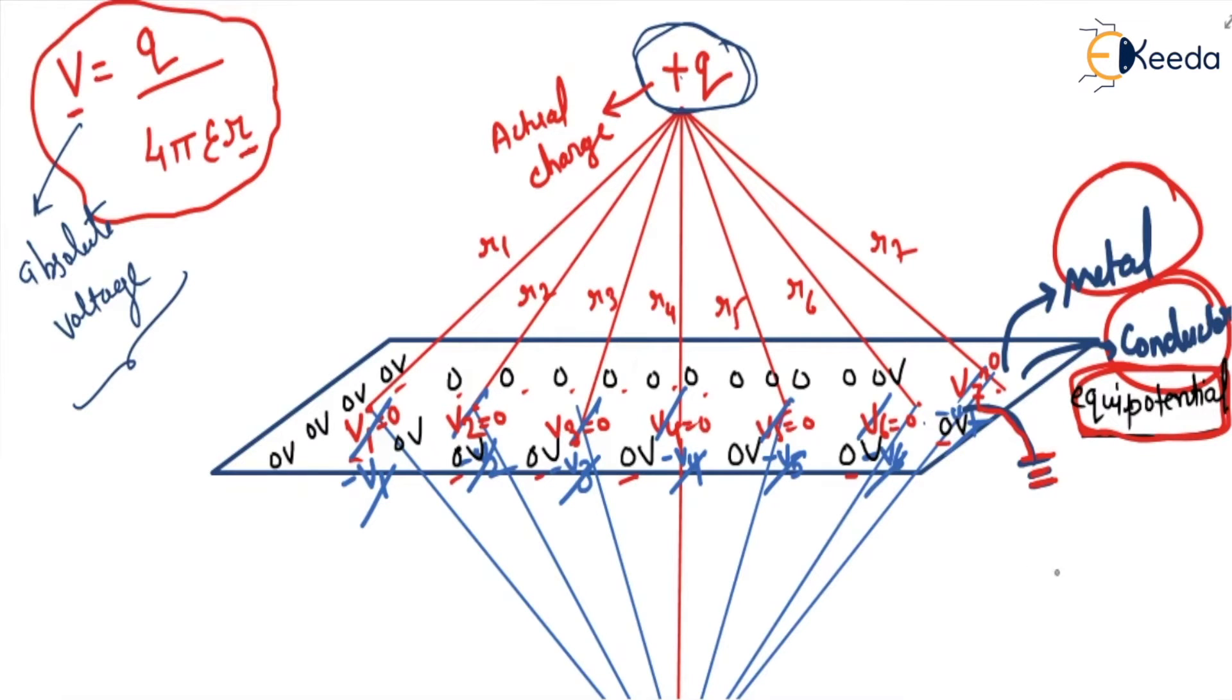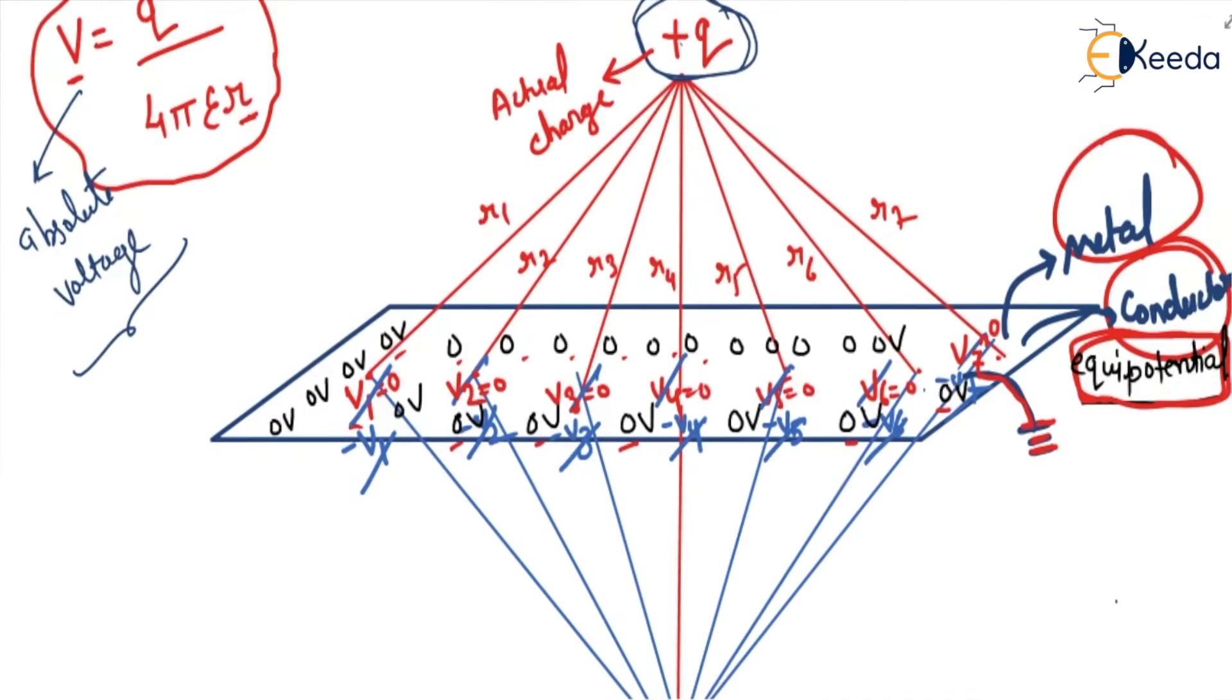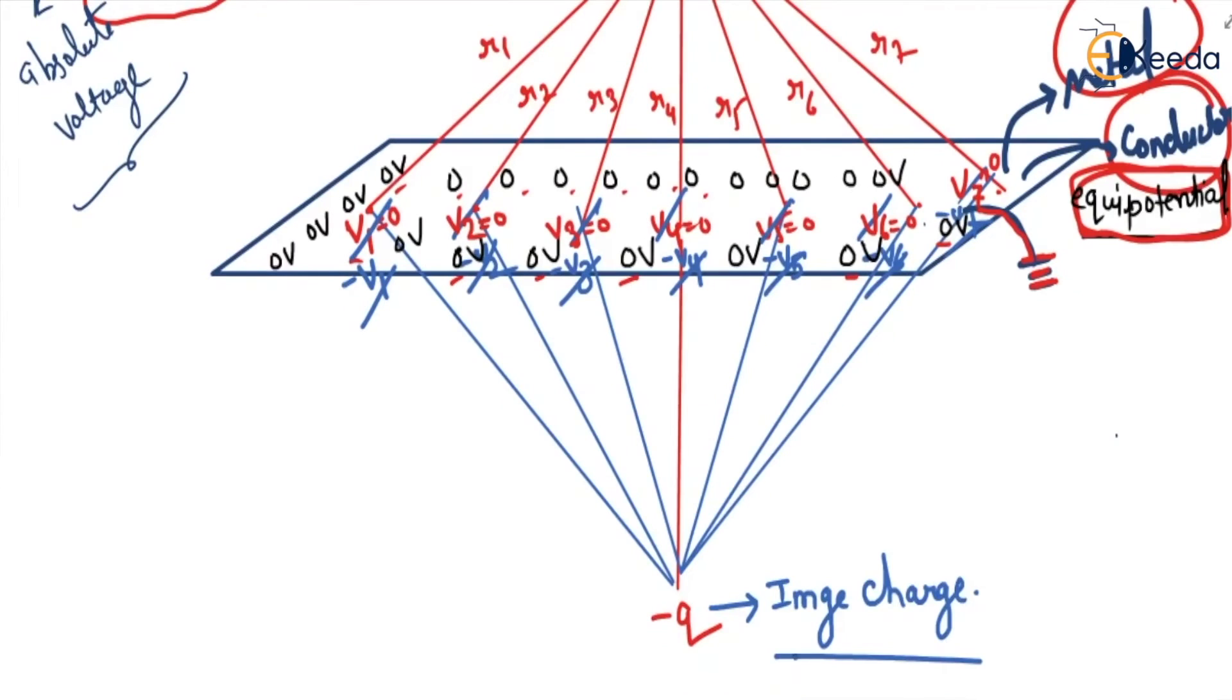So to make it zero, we will take its image. We will take the image of this charge, and the image of the charge is minus q.